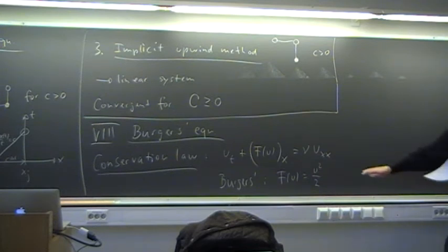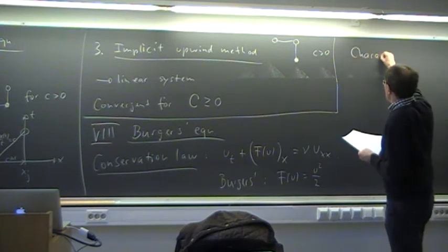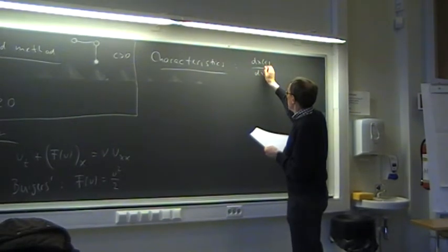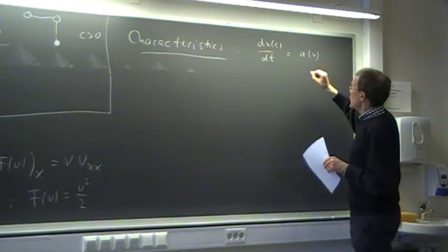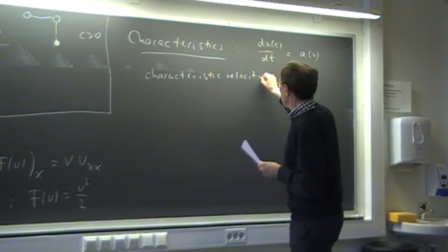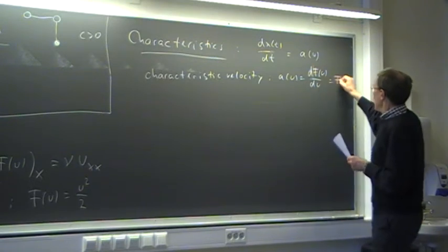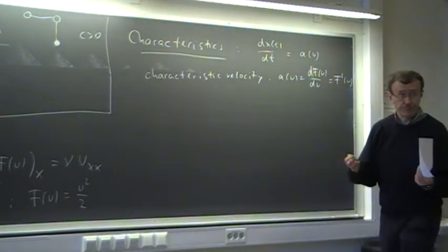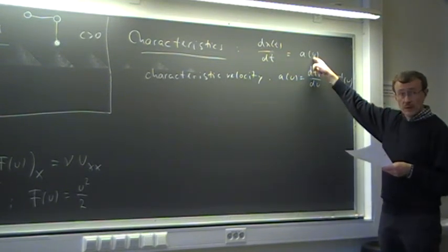We can also look at the characteristics here. They are given by the curves x(t), which for a general conservation law have a slope equal to the characteristic velocity a(u) = dF/du = F'(u). For the Burgers equation, F'(u²/2) = u itself. So u is the characteristic velocity of the Burgers equation, and that determines the slope of the characteristics.